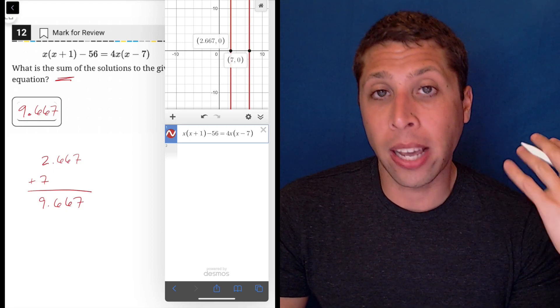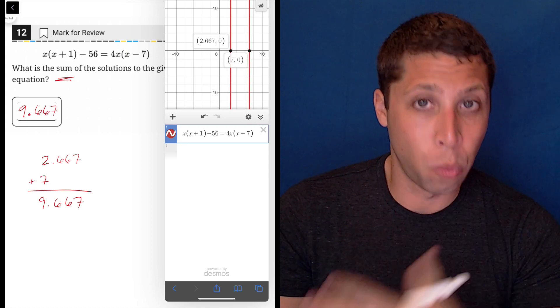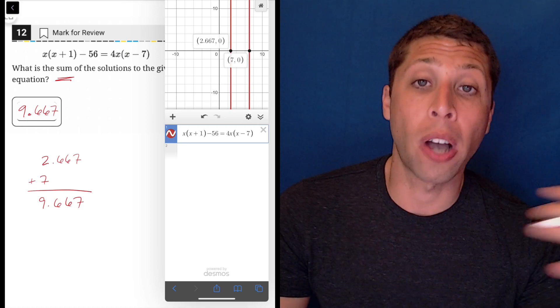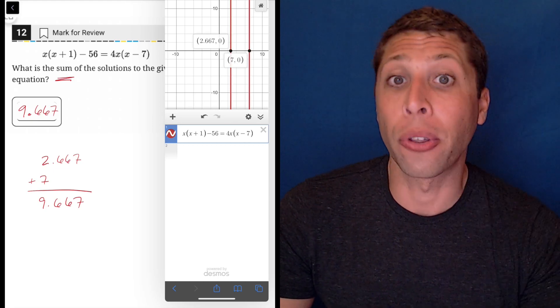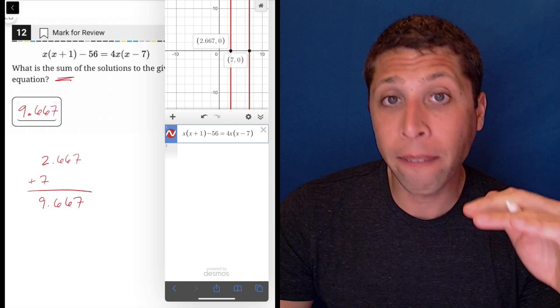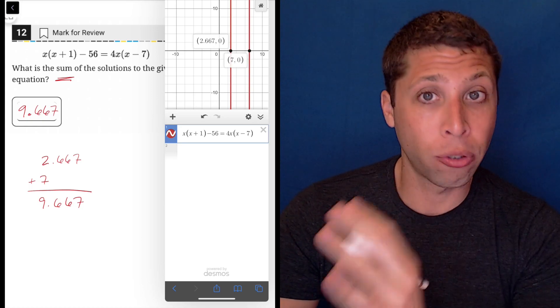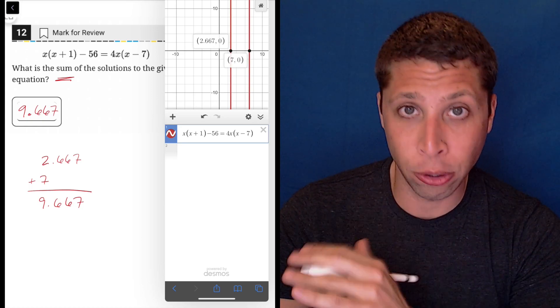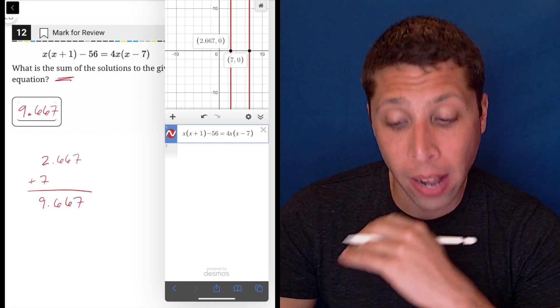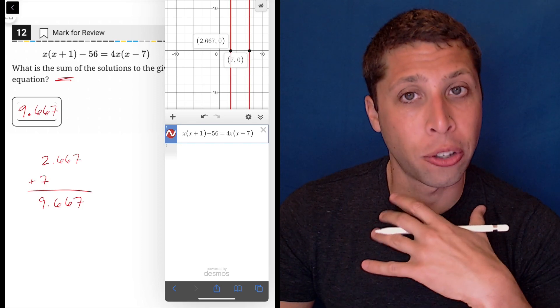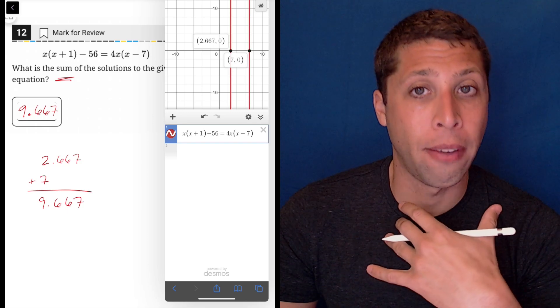the way that these kind of student-produced response questions work, when it's a messy decimal, something that goes on and on forever, like two-thirds in this case, you have to be exact about how you enter it. And there are instructions included on every one of these that tells you how to do it, but I think it's confusing.